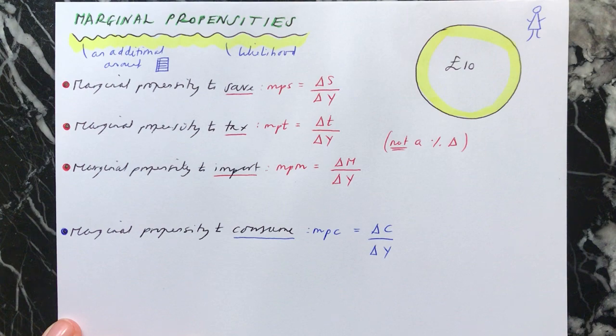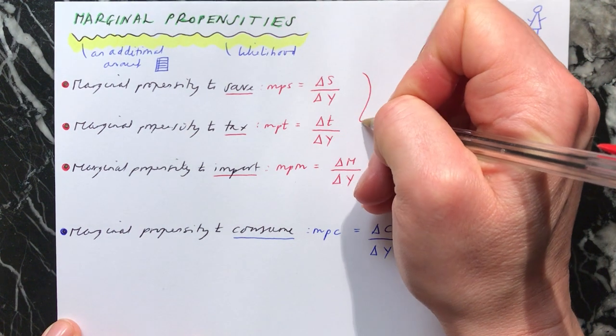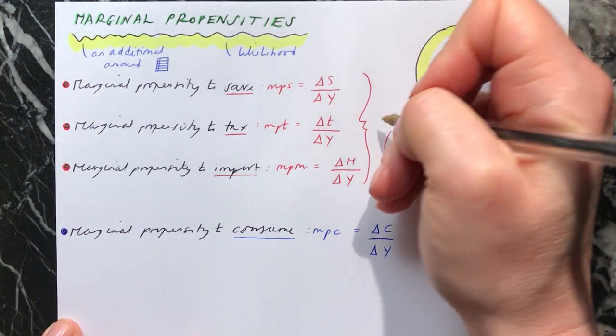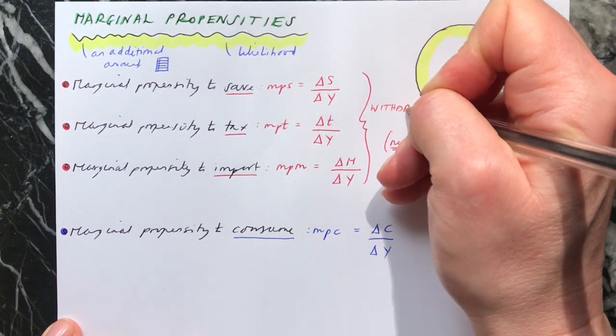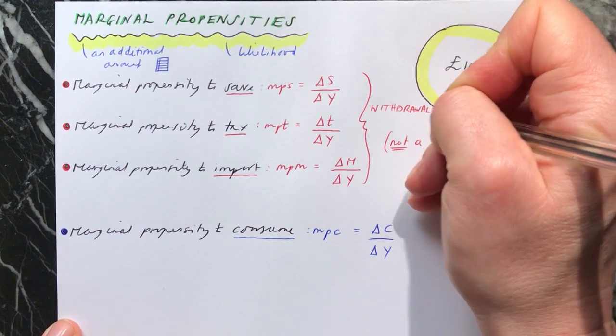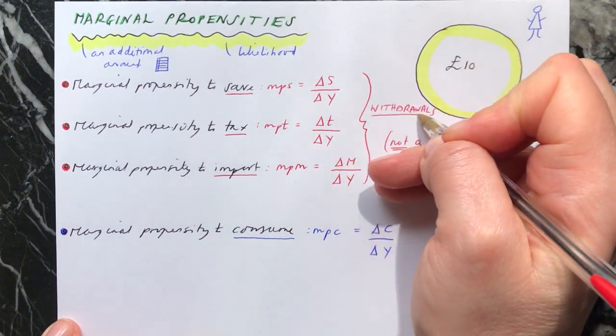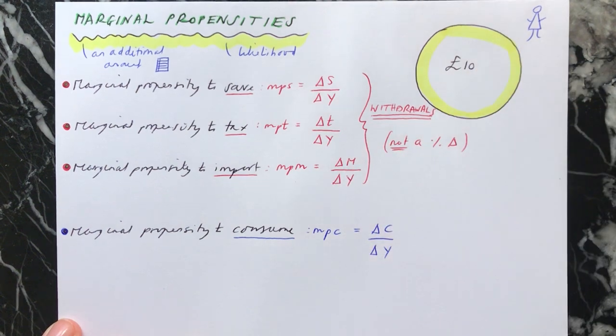These three at the top, as we said before, we know these are all withdrawals. They all cause money to leave the circular flow of income. They're all withdrawals. And whenever you have any money, your money can either be spent or consumed or it's withdrawn from the circular flow.